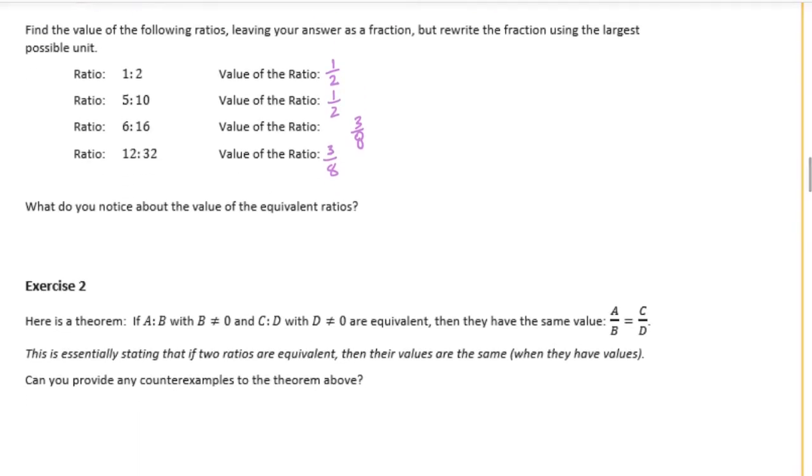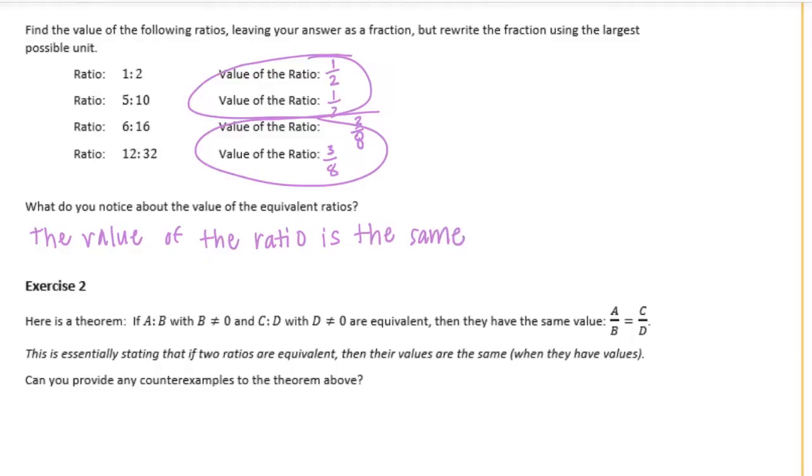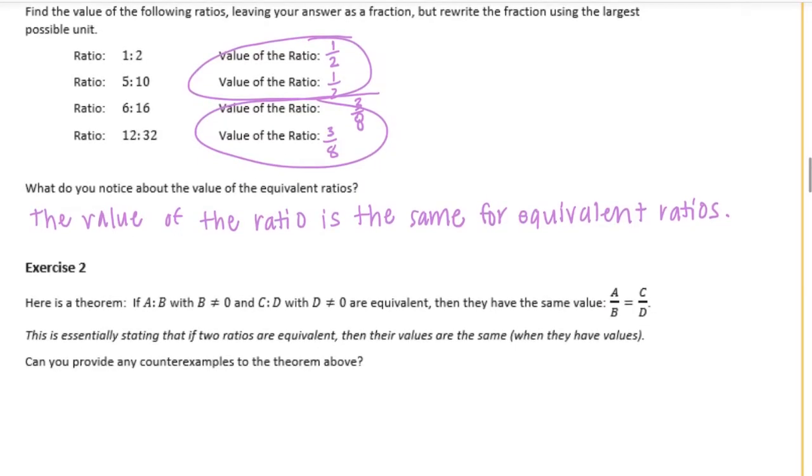What do we notice about the value of equivalent ratios? Well, we notice that when the ratios are equivalent, like these two and these two, they have the same value. So we can say the value of the ratio is the same for equivalent ratios. Basically, you just need to reduce them to their simplest form and see if they're equal. If they are, they're equivalent ratios.